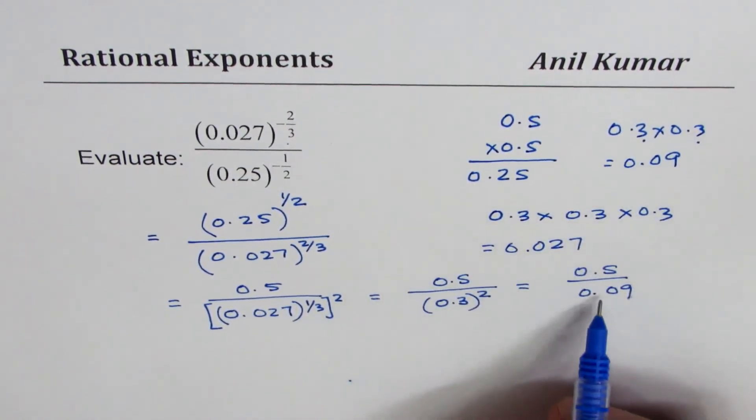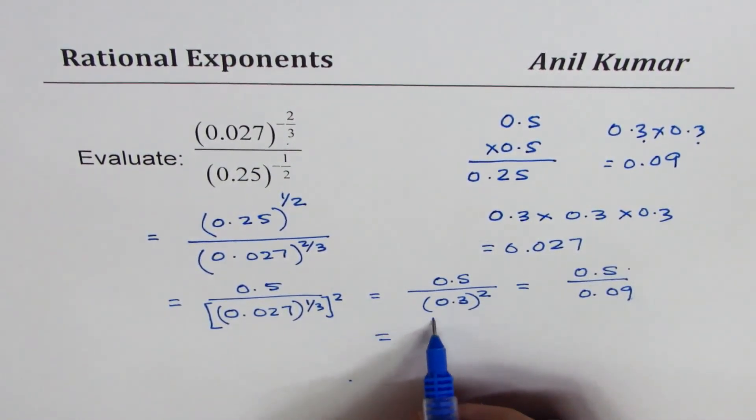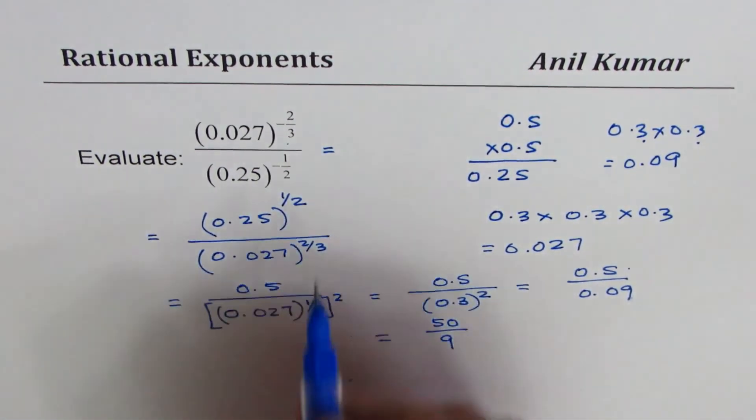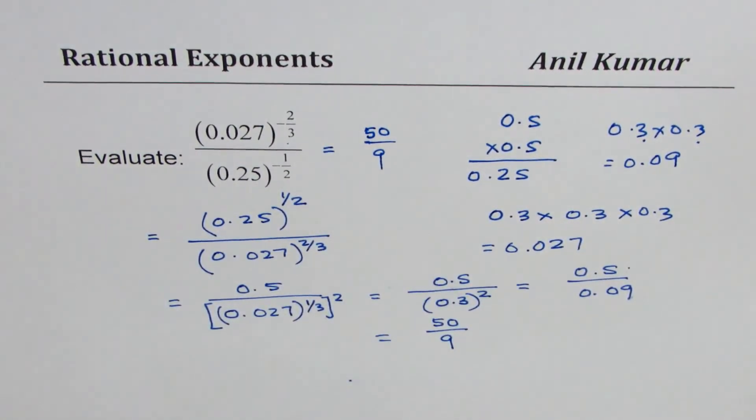Now we can multiply both by 100, getting 50 in the numerator and 9 in the denominator. So the answer for this question is 50 over 9.